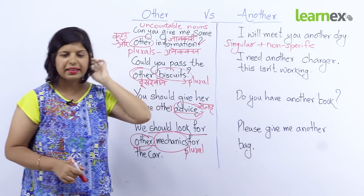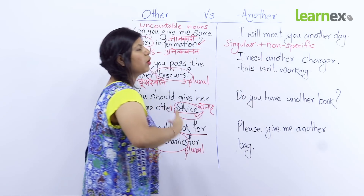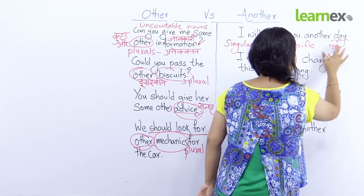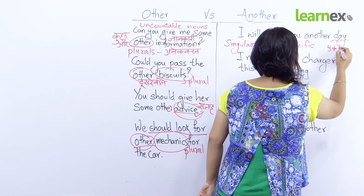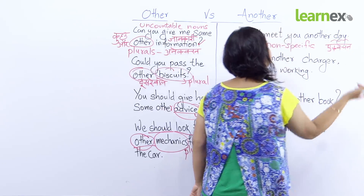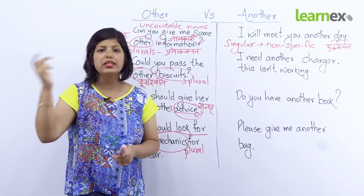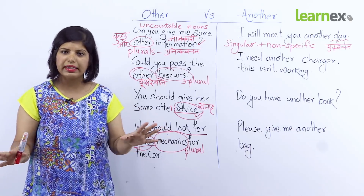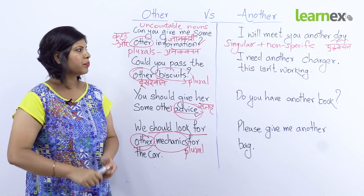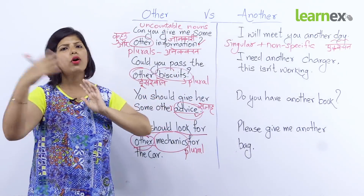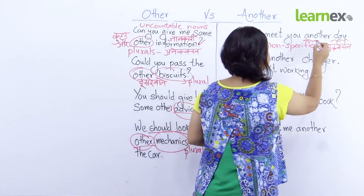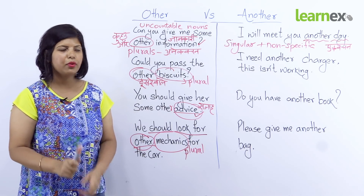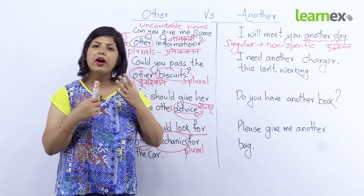Pahela example: 'I will meet you another day.' Iska matlab hai mein aap se kisi aur din milungi. Yehaan pe 'day' singular hai — ek vachan — aur meinne yeh nahi bataya ki kaun sa din; koi bhi din, kisi aur din — na tomorrow, na do dino baad, na ek hafte pehle. Yeh non-specific hai. So 'I will meet you another day' — mein aap se kisi aur din milungi. Yehaan aap 'other day' ya 'the other day' nahi keh sakte — woh incorrect hoga.